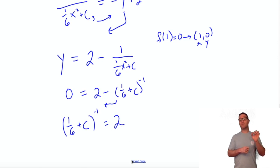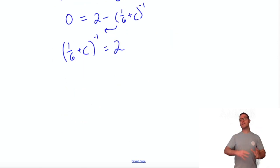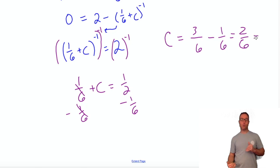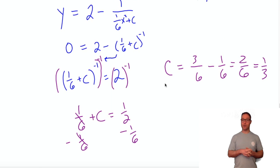To get rid of a -1 exponent, we want to raise that to the -1 power. Why? Because -1 times -1 is positive 1. So if you're trying to cancel out an exponent, one way to do that is raise a power to a power and multiply to get 1 as the new exponent. So I'm going to have 1/6 + c = 2⁻¹, which is 1/2. I'm going to subtract 1/6 from both sides. Get a common denominator: 3/6 - 1/6 gives me 2/6, which is also known as 1/3.